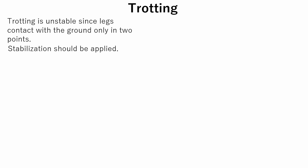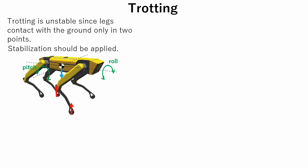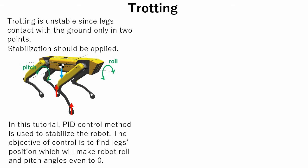Now let's talk about trotting. As it was mentioned before, trotting is unstable since legs contact with the ground only at two points at the same time. So, some kind of stabilization control should be applied to stabilize the robot. The objective of control is to find the position of the legs which will make robot roll and pitch angles even to zero. In this tutorial, PID control is used to stabilize the robot.